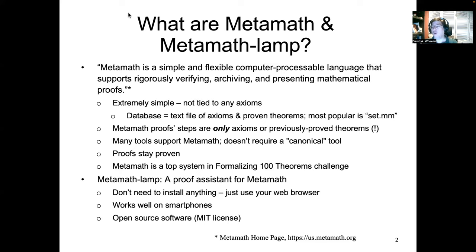MetaMath proof steps are only axioms or previously proved theorems. This is really different from almost all other systems. Most systems, you say simplify or blast or similar kinds of statements, and you ask the computer to find a proof, and it tells you if it found one, and you hope it was right. MetaMath is different — MetaMath pulls the rigor up to 11. Every step has to be justified by an axiom or an already proven theorem.